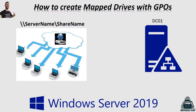Hey guys, welcome back to another video. In this video we're going to be talking about how to map a network drive in Windows. When you have your server and your client, you can set it up manually — and we'll do it both ways — but the main focus is on automating that process using Group Policy. You'll need your server name and a share name, and I'm going to walk you through every step.